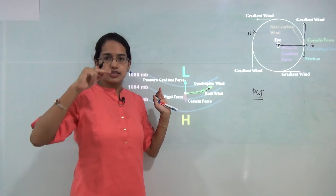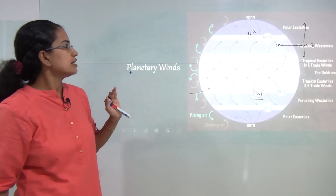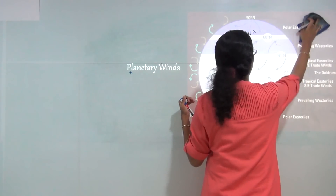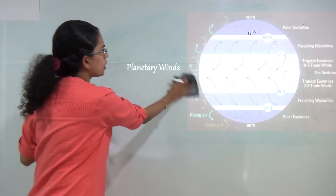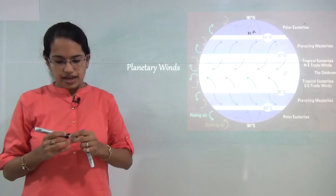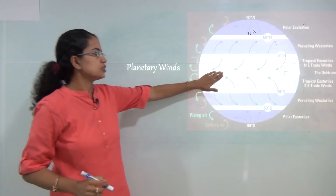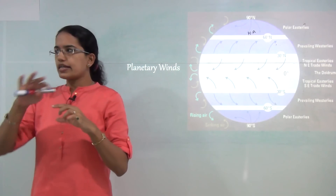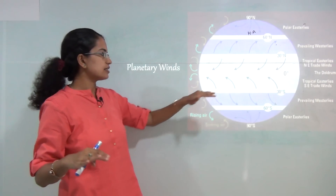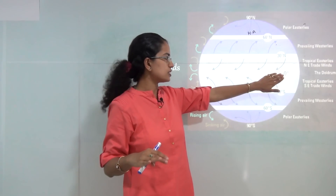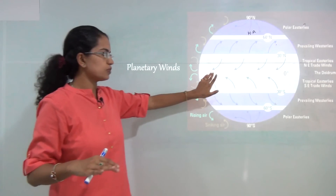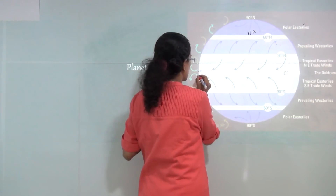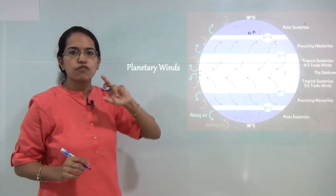Once we understand wind deflection patterns we can understand global wind movement patterns, known as planetary winds or permanent winds. When we talk about planetary or permanent winds, the first important feature is the doldrums area — 5 degrees north and south of the equator — lying along the ITCZ (Intertropical Convergence Zone). This is a region of low pressure, and the ITCZ slightly varies around 5 degrees north and south.